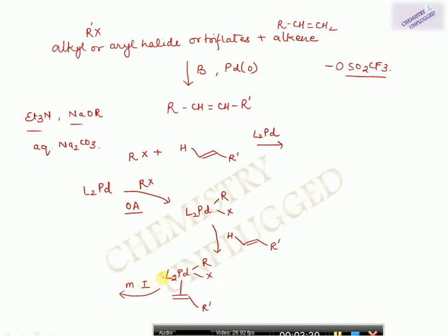The migratory insertion reaction — also called carbometallation — proceeds so that L₂Pd remains, X remains as it is, and the R group attaches to the alkene. This gives an alkyl-palladium intermediate where Pd is now bound to the carbon chain.